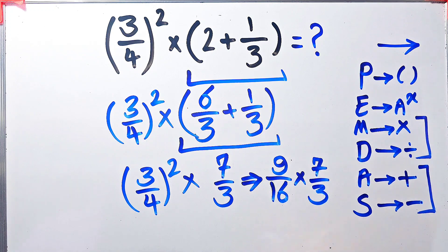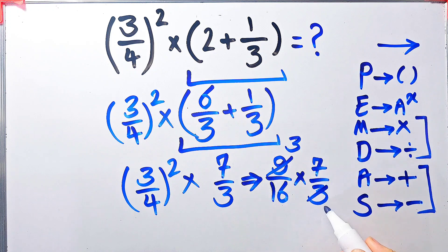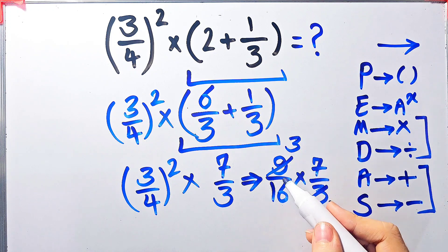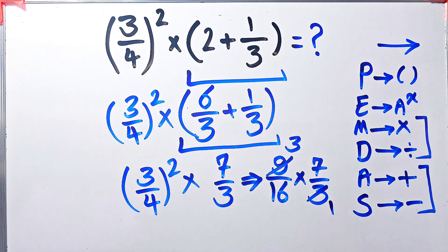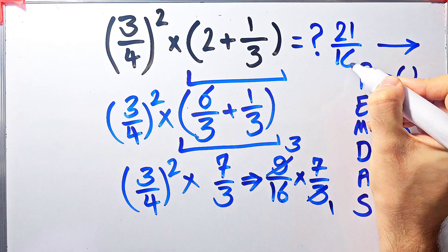9 divided by 3 equals 3, and 3 divided by 3 equals 1. Now we have 3 over 16 times 7. 3 over 16 times 7 equals 21 over 16. The final answer of this question equals 21 over 16.